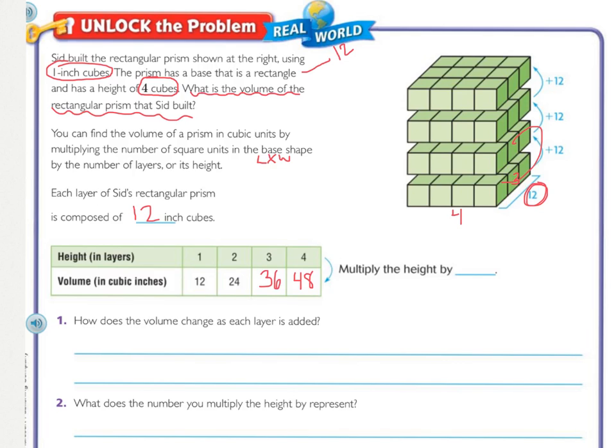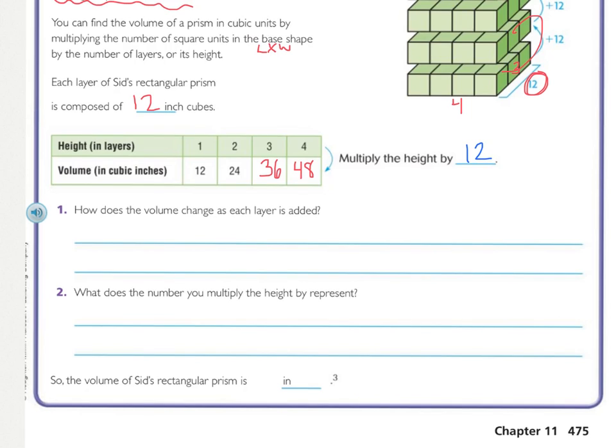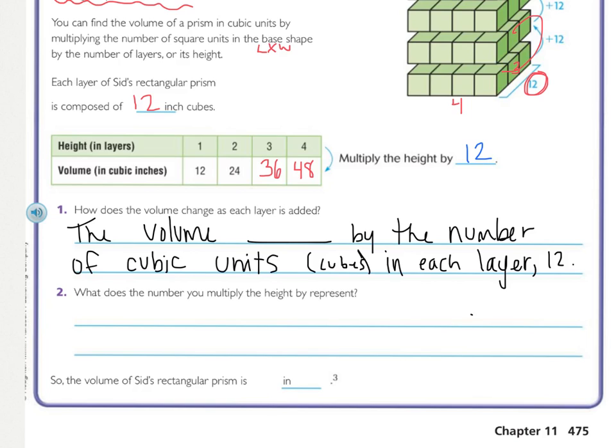And then your fourth layer would be 48. So then if you're looking for your pattern for your numbers, you would multiply the height, so how many layers there were, by the area, and what was the area that we were multiplying by? It was 12. So let's look at number 1 here. How does the volume change as each layer is added? So the volume blank by the number of cubic units, which are the cubes, in each layer, and that was 12, because there's actually 12 cubes here. So does that volume increase, decrease, stay the same? It increases.